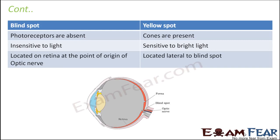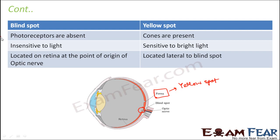Blind spot versus yellow spot. The blind spot has no photoreceptors, which is why it is called blind — light cannot be sensed there at all. The yellow spot is another name for fovea; it is called yellow spot because only cones are present there, with no rods.